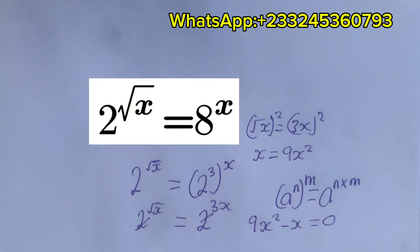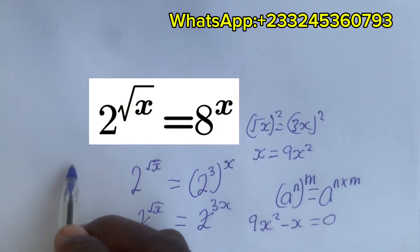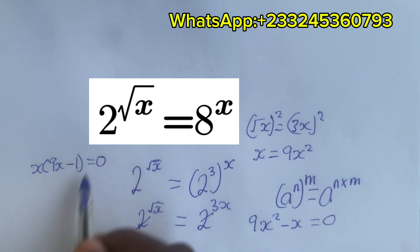So we factorize the x out to get x(9x - 1) = 0. We take x = 0 and 9x - 1 = 0, which gives x = 1/9. That's cool!